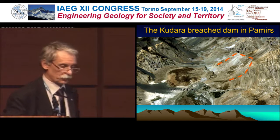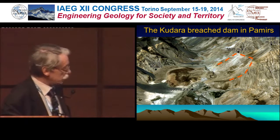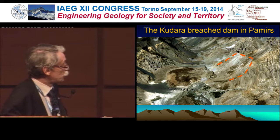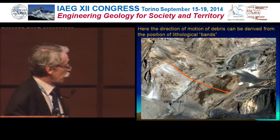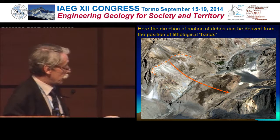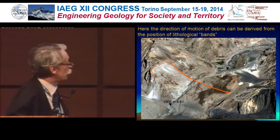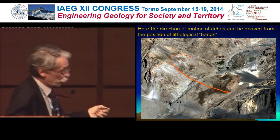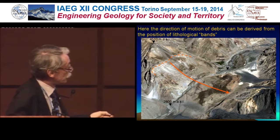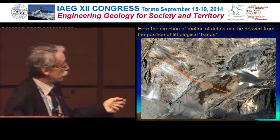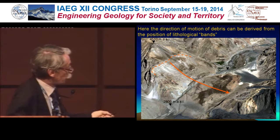Another good example is the Kudarab Ridge Dam in Pamirs. Here we have a distinct headscarp and some remnant of a glacial valley. But if we look closer at the body, indeed some units are composed of glacial — moraine — material. However, the position of these stripes of material at the foot of the headscarp distinctly indicates that it is just this scarp which was the source of this material, not the main valley nor any tributary valley.